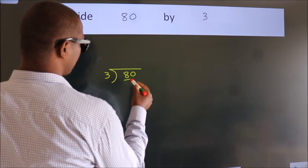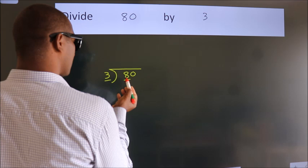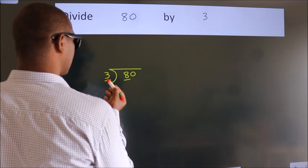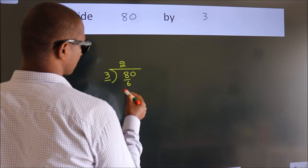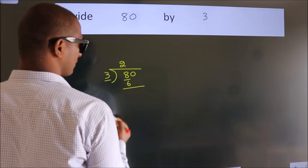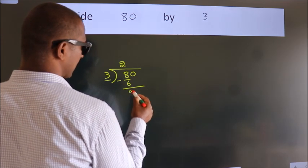Here we have 8. Here 3. A number close to 8 in the 3 table is 3×2=6. Now we should subtract. We get 2.